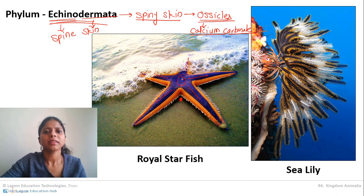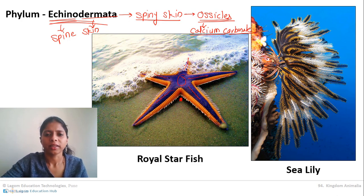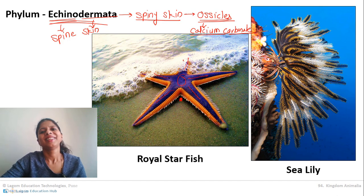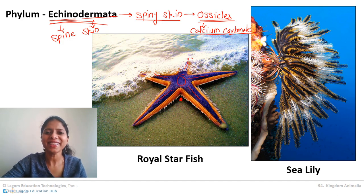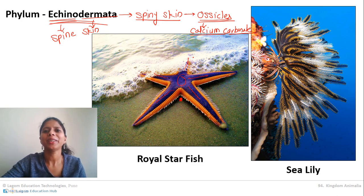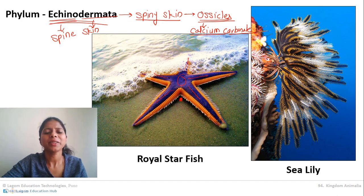The next characteristic of Echinodermata is that they are always triploblastic, meaning all three germ layers are present: ectoderm, mesoderm, and endoderm. So these are two general characteristics of Echinodermata.